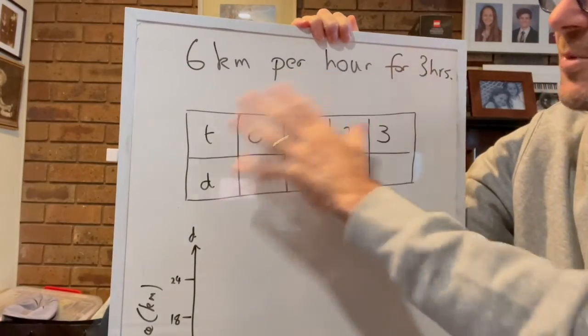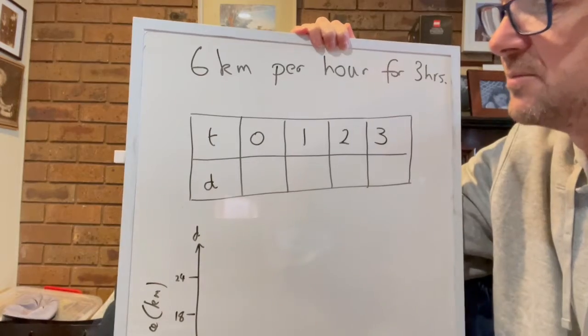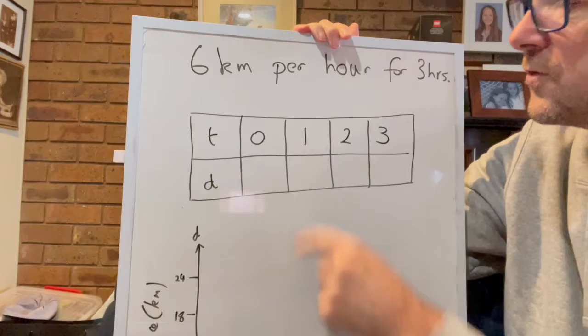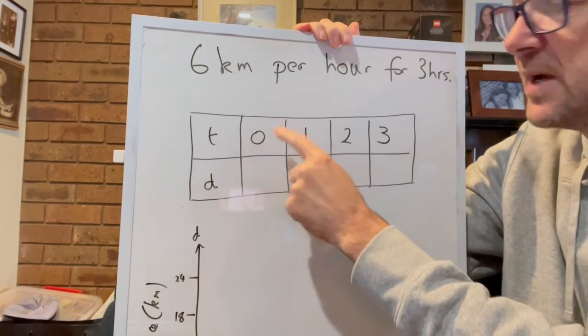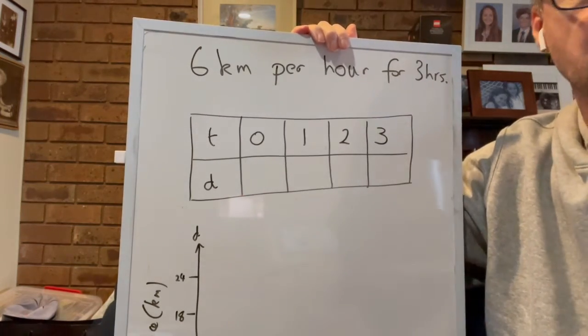So we start firstly by drawing up our table of values. Then in this question it tells us that t is equal to time and d is equal to distance. So we've got to make sure that we always start here at zero so we get that zero value happening because it gives us our first coordinate when we go to do our graphing.